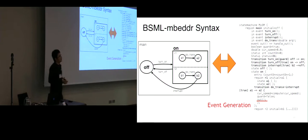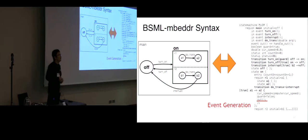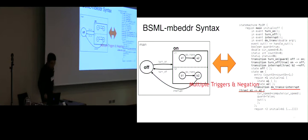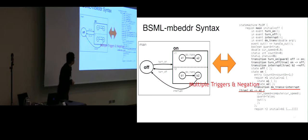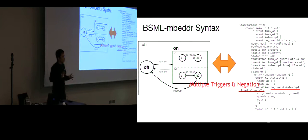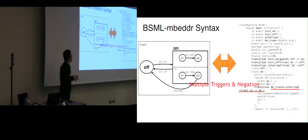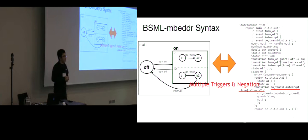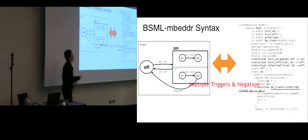We also have generating events. When we generate events, the event is going to be enabled in the current big step. The triggers of transitions can have multiple of them, so the transition is enabled only when all of those trigger events are present. We can also negate those triggers, so if negated, the transition is enabled not by the presence of the event but by the absence of the event.